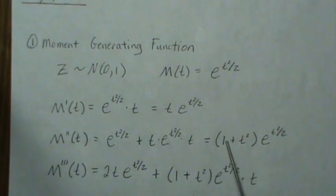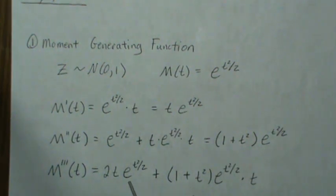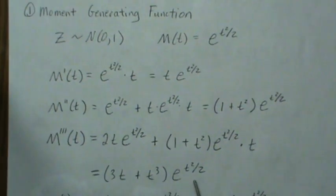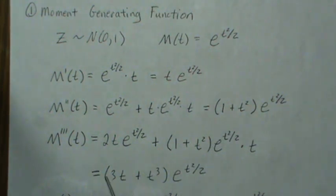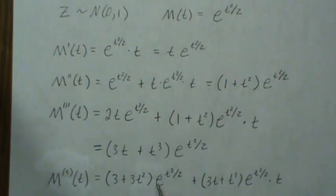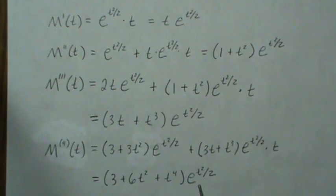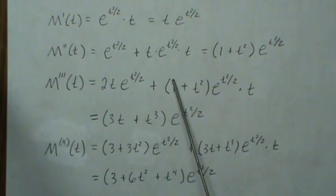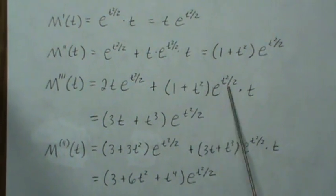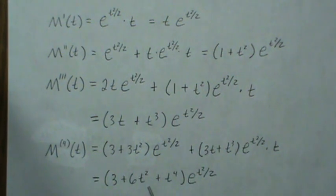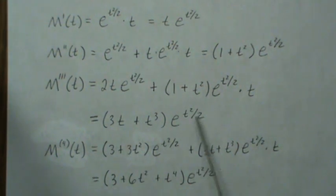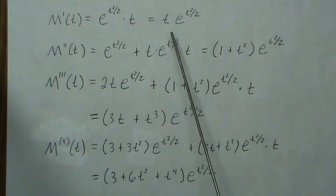The third moment would be the derivative of this, which is that times the second, plus the first times the derivative of the second. Then we can factor out this term on both of them. The fourth moment, it would be the derivative of this, and again we factor this out. Notice that we have this number times a polynomial, this number times a polynomial, this number times a polynomial.